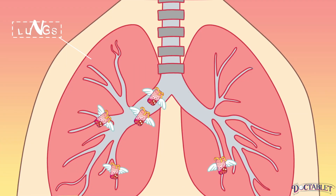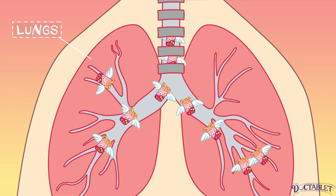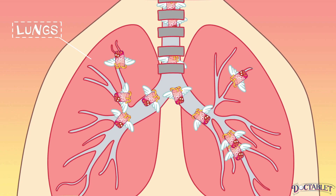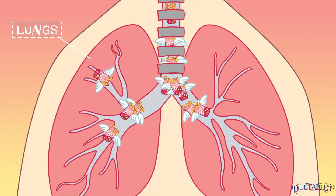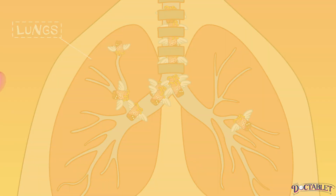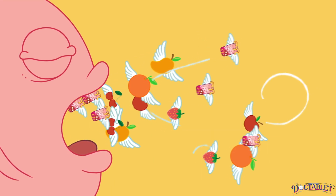In severe cases of DKA, some of the excess ketones in the body are converted to a substance called acetone in the lungs. This results in a fruity-smelling breath.